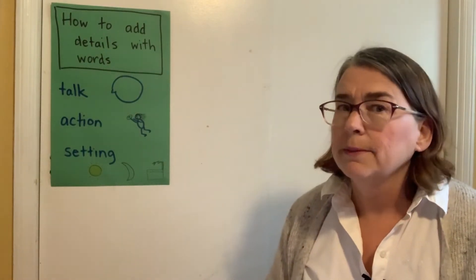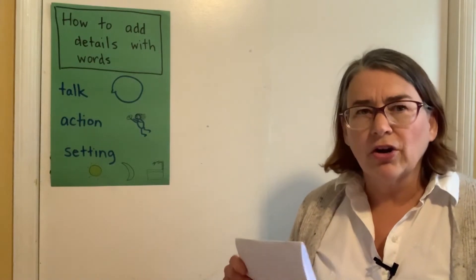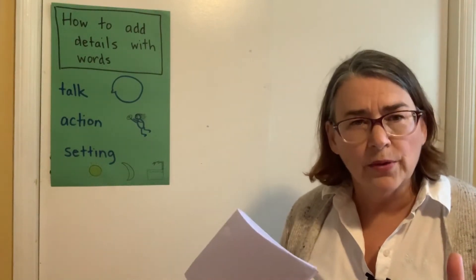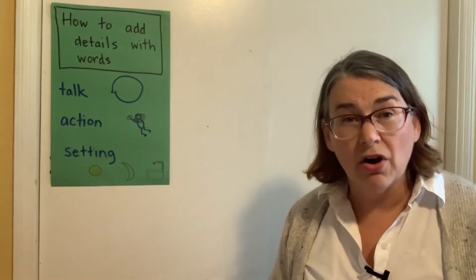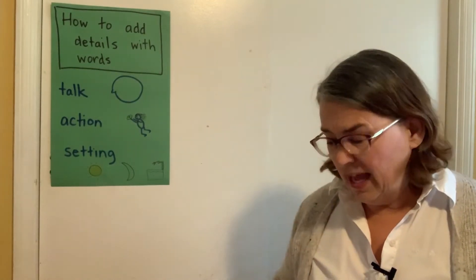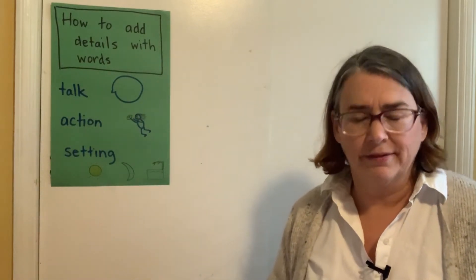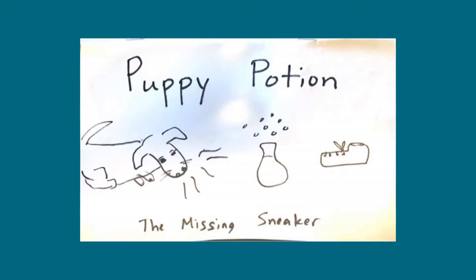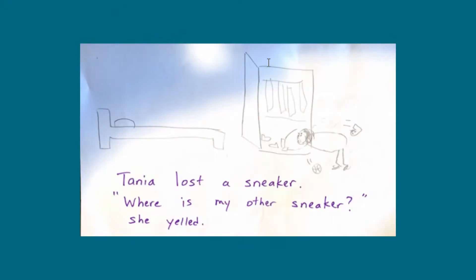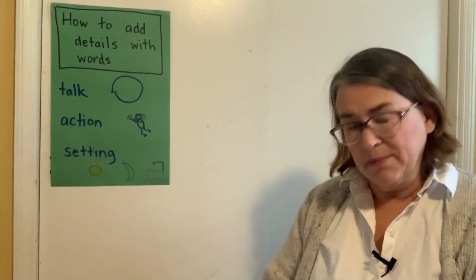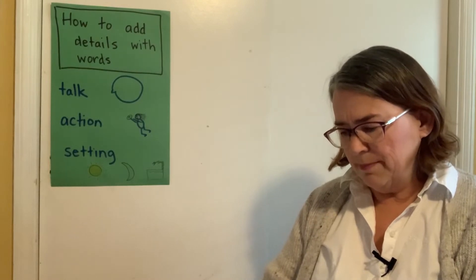My story is a fiction story. It has a little bit of magic in it. It's called Puppy Potion. It's about a girl who can't find her sneaker. She and her brother have magical powers and they make a potion — when you drink it, it helps you smell as well as a dog. She wants to be able to sniff out where her sneaker is in her house. I already started it: 'Tanya lost a sneaker. Where is my other sneaker? She yelled.' I already have a little dialogue there.